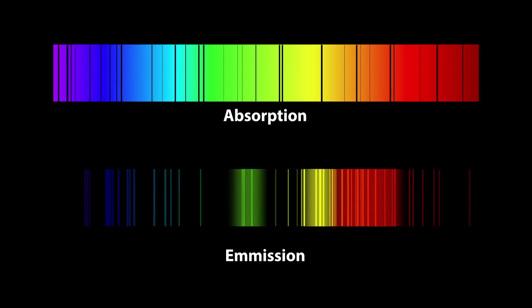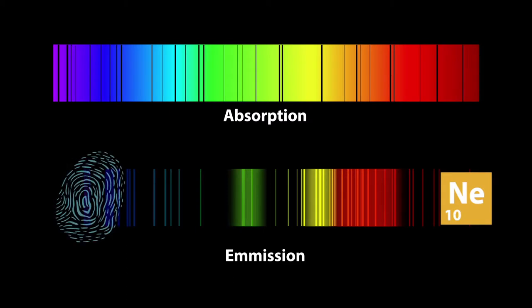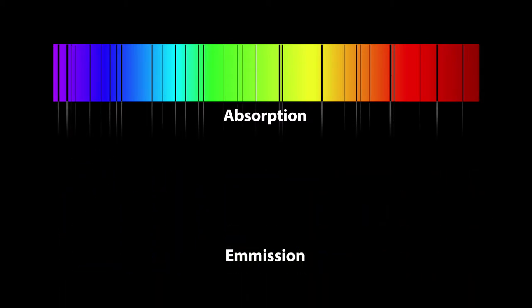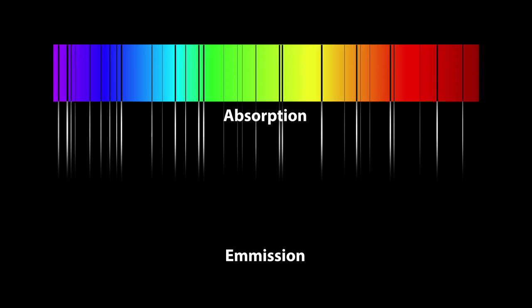Each element has a unique emission spectrum, similar to fingerprints. We can thus infer which elements are present on the solar surface based on the black absorption lines.